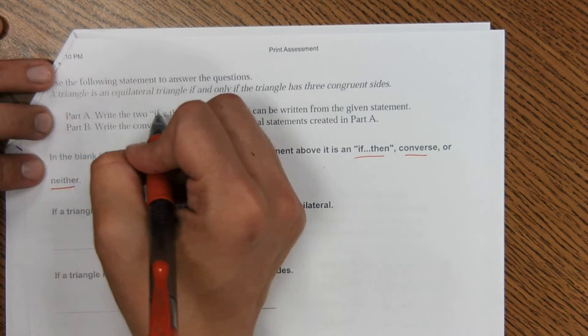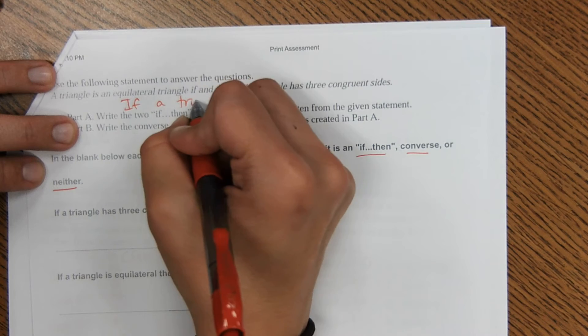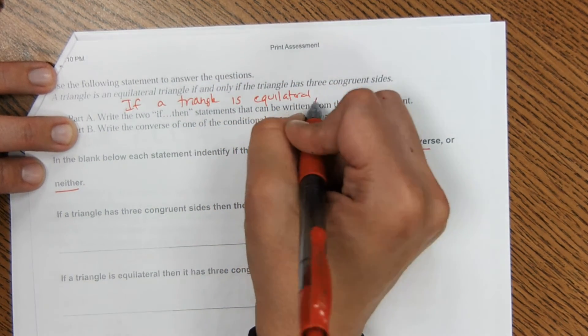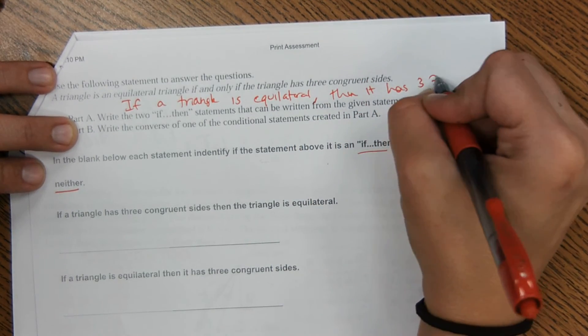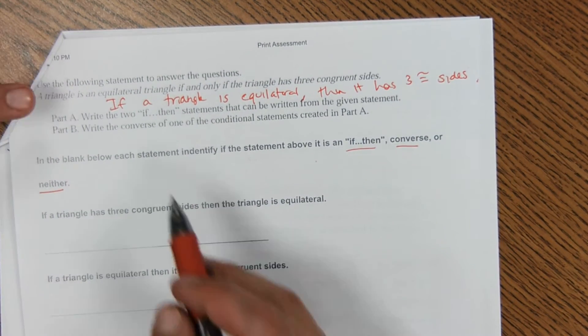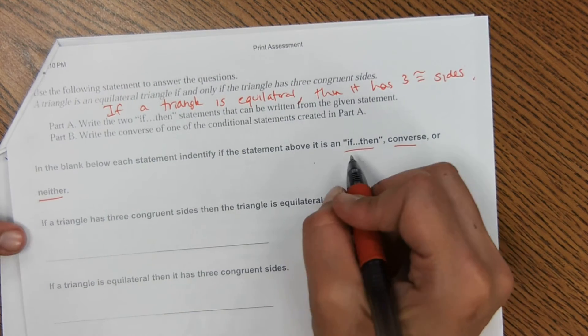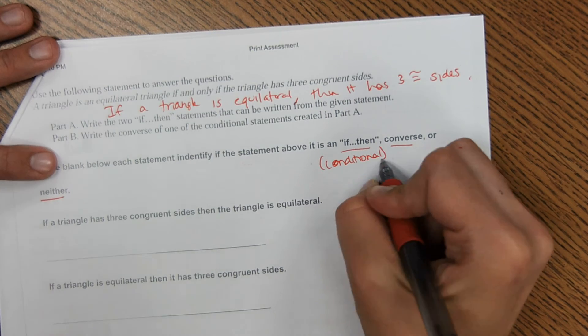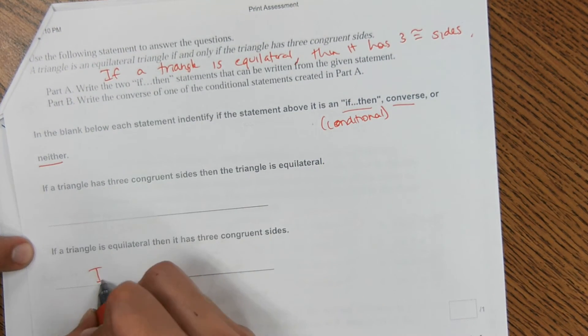Okay, based on the statement, so if a triangle is equilateral, then it has three congruent sides. Okay, there's my if-then statement from this. So it wants to know which of these are an if-then, or conditional is what I would normally call it, or a converse. So based on what I wrote, this one would be the if-then, and then this one they switch it.